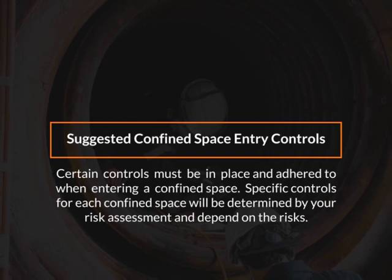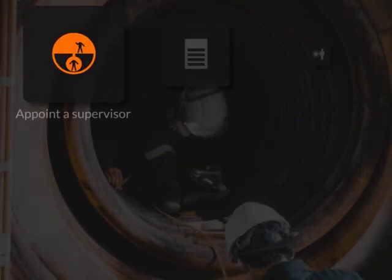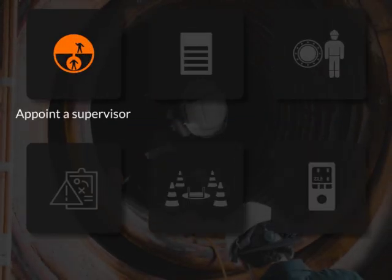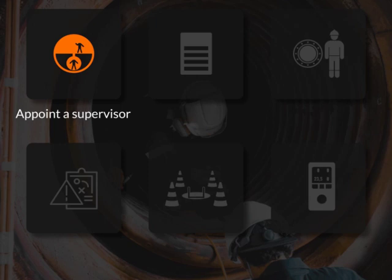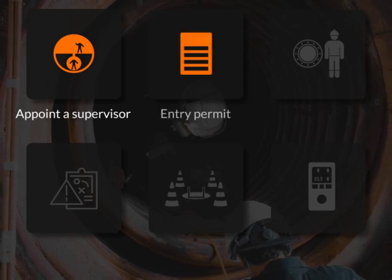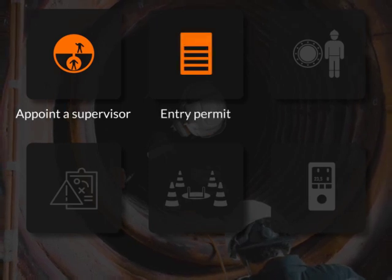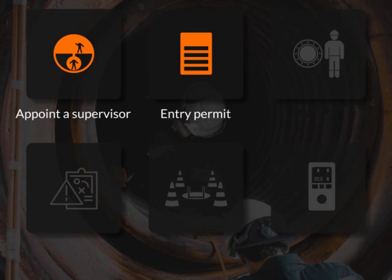Some example controls are: Appoint a supervisor – to make sure necessary precautions are taken. Entry permit – require a permit to be obtained before entry.